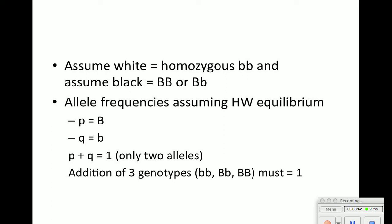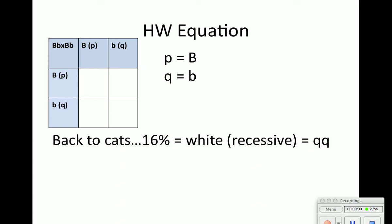Assume little b, little b homozygous is white and black is big B. P equals big B, Q is little b, and they must equal one. The Hardy-Weinberg equation is: P² + 2PQ + Q² = 1. Since 16% of the population is white (little b, little b), Q² = 0.16. Taking the square root, Q = 0.4. Since P + Q = 1, P = 0.6. From there we can calculate all other genotype frequencies.